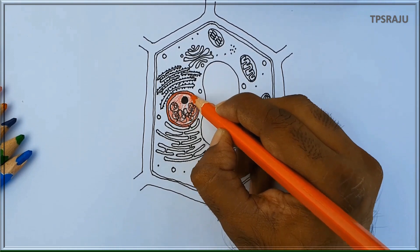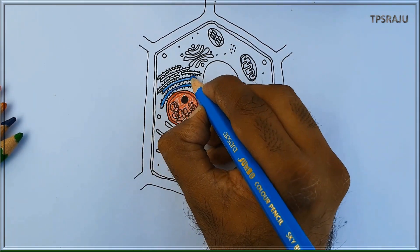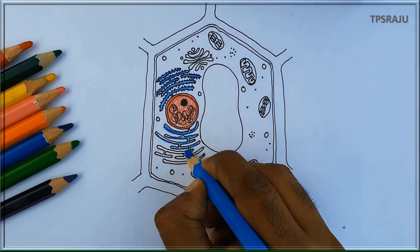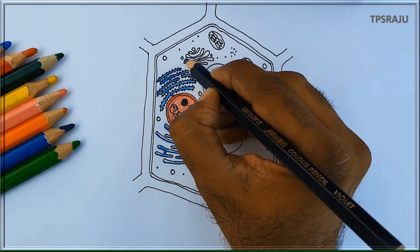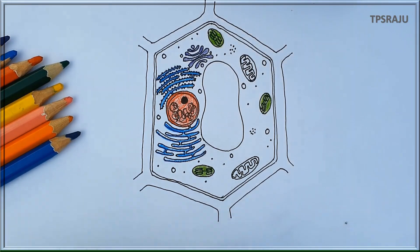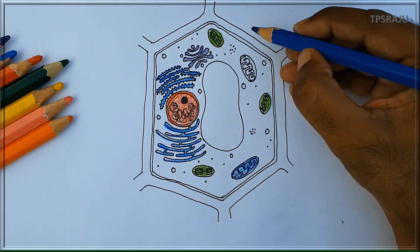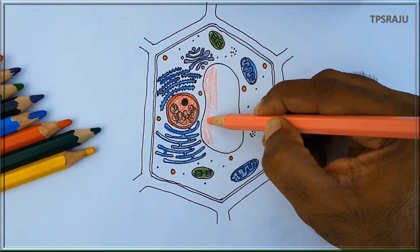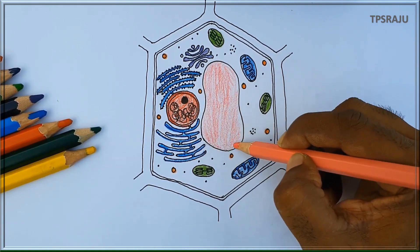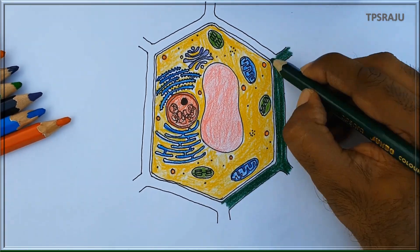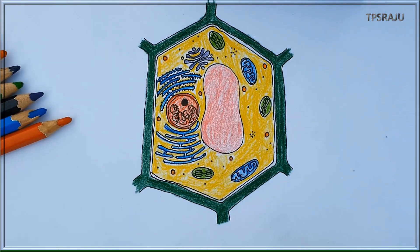We are applying red color to the nucleus, blue color to the rough endoplasmic reticulum, and this is the smooth endoplasmic reticulum. Applying violet color to the Golgi complex, green color to chloroplasts, dark blue color to mitochondria, orange color to lysosomes, pink color to the vacuole, yellow color to the cytoplasm, and dark green color to the cell wall. If we apply colors once again perfectly, it will appear very beautiful.